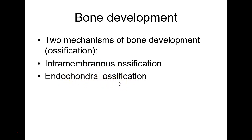So basically that radius, ulna, femur — some of these long bones — they were all cartilage at one time. Then the cartilage basically dies off for the most part, and it's replaced by bone.